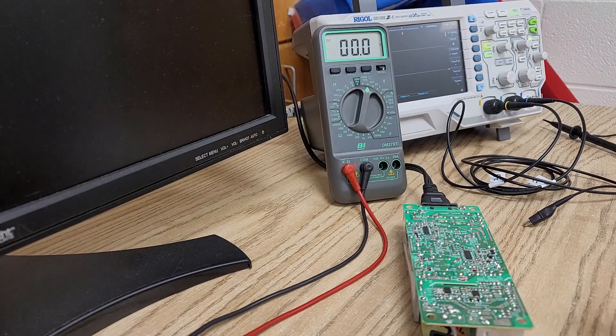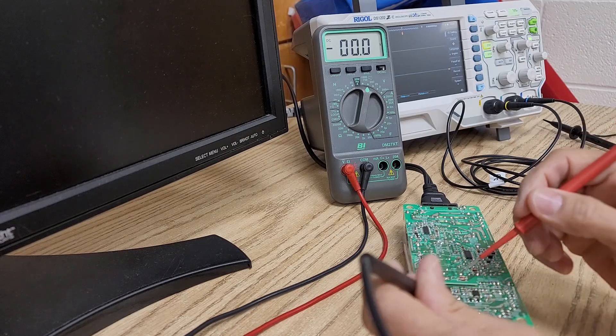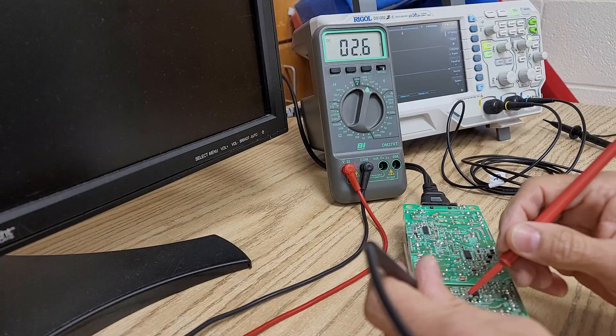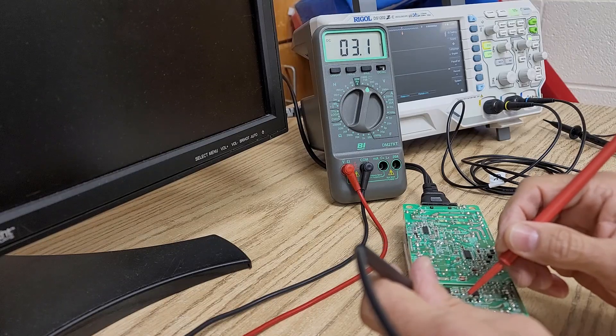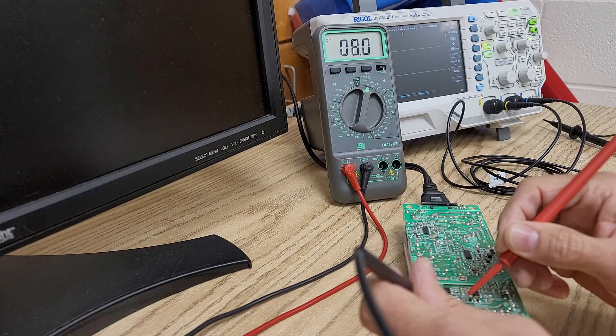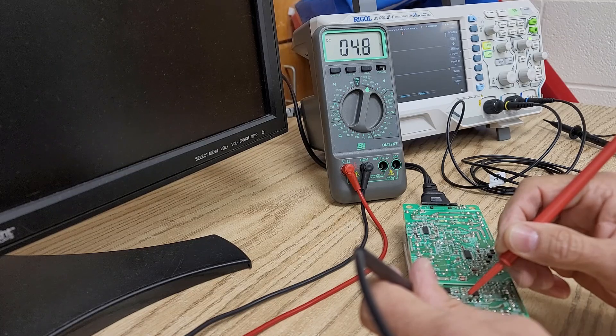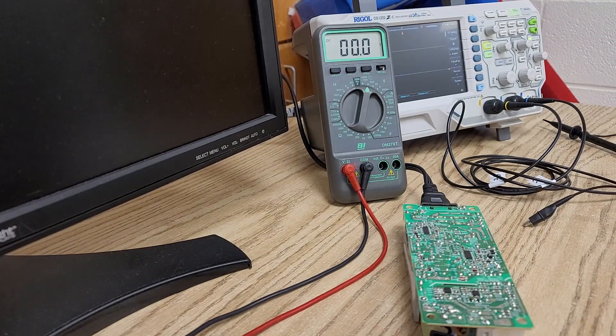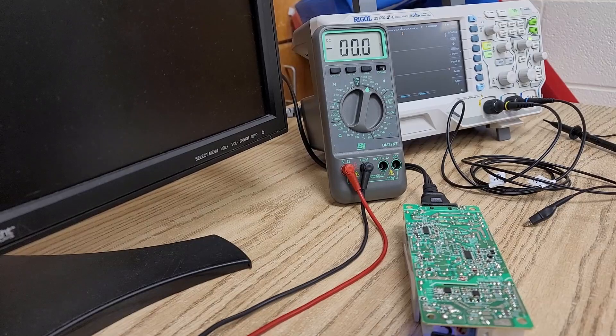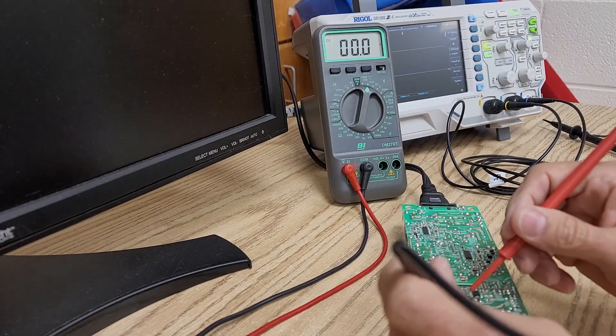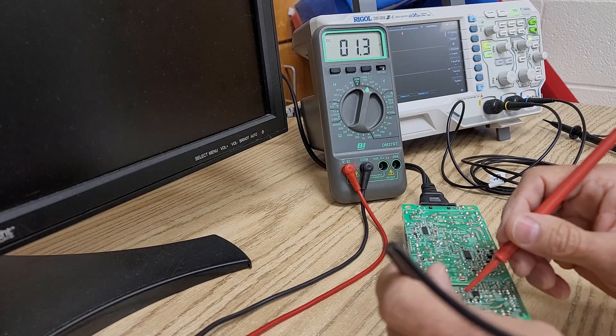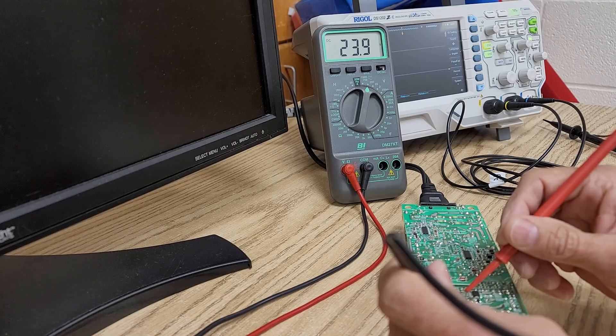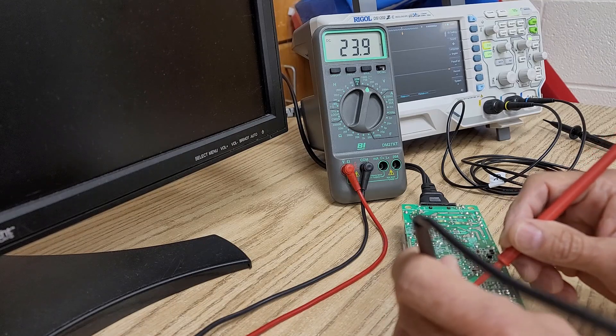Okay, so I've connected the known bad power supply to a monitor. And this is what's happening. Look at the voltage. It's supposed to be at 24 volts. I don't know if y'all can hear that popping. Let me disconnect the monitor.